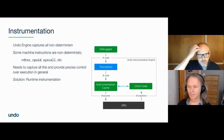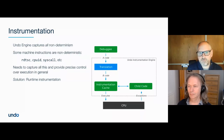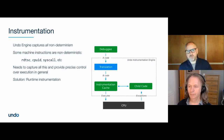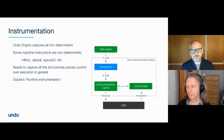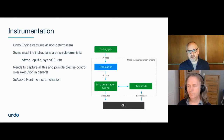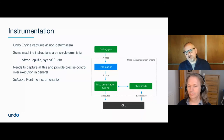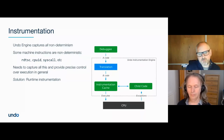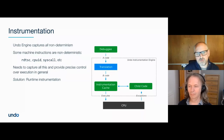You can keep recording with a circular event log, and you decide how much event log space you want. How far back you'll be able to wind time depends on what your program is doing. Some customers run with very large event logs — hundreds of gigabytes — to wind back hours and hours. Usually people run with an event log around a gigabyte in size, which typically gives anything from a few seconds to many minutes of recording.